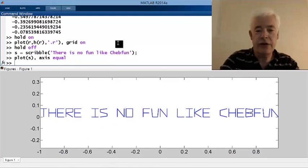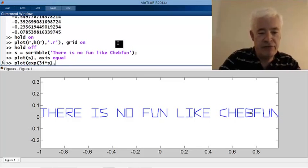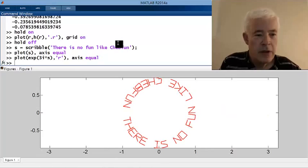Let's do one computation on that. I'll say plot e to the 3i times s, and let's make that red, axis equal. There is no fun like ChebFun.